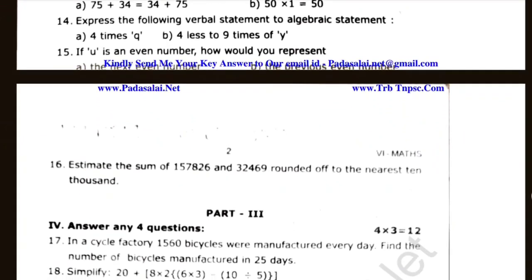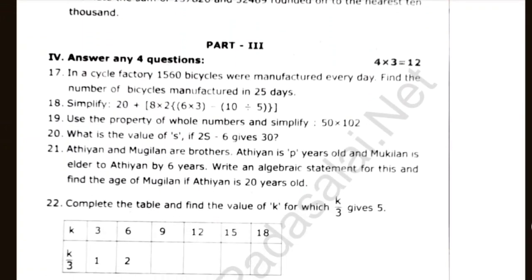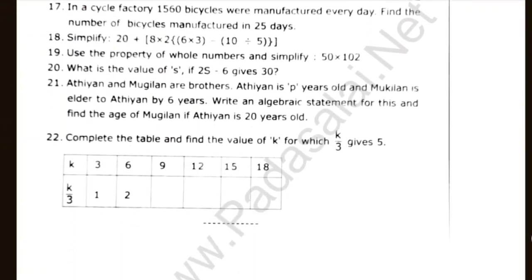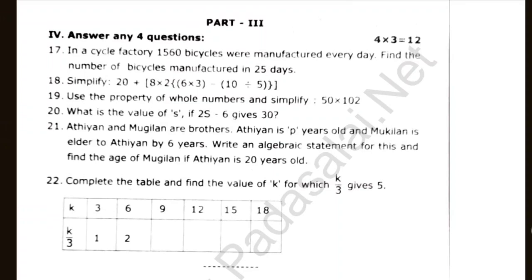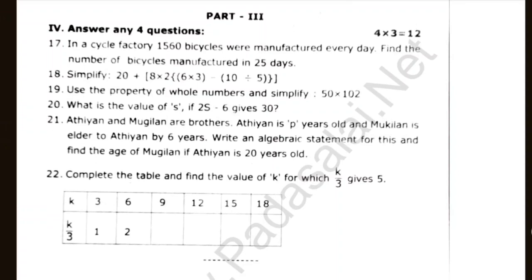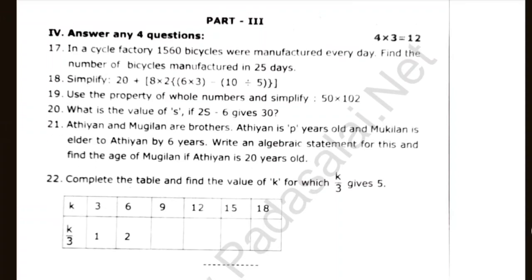Estimate the sum. For 2-mark and 3-mark questions you can go to 6 or 4. A factory manufactured 1560 bicycles. Find the number of bicycles manufactured in 25 days. 1 day, 25 days — it's very simple. Simplify.